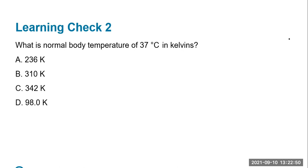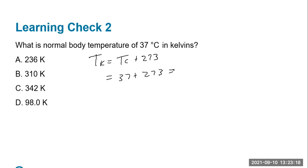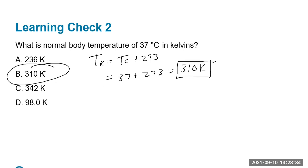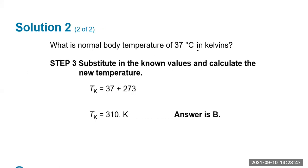Let's find normal body temperature in Kelvin. We go from Celsius to Kelvin: temperature in Kelvin equals Celsius plus 273, which is 37 plus 273 equals 310 Kelvin — just Kelvin, no degrees. Since 37 was a whole number, we take our answer to a whole number as well, so the answer is 310 Kelvin.